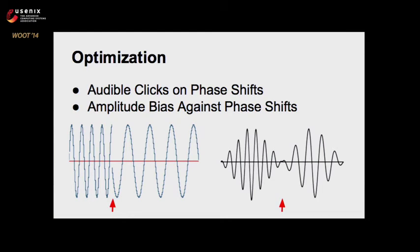One problem we ran into with frequency shift keying is that whenever you shift from one symbol to another — shifting from high to low frequency — you might not be at a convenient part of your wave to do this. When you have a dramatic break, like that red arrow on the left, it can manifest itself as a click in the speakers. When this starts happening too often, it ruins the stealthiness of your attack. So what we implemented, shown on the right, is reducing the amplitude at the beginning and end of each symbol — this way, if you have a dramatic shift in the pattern, it's so quiet you won't hear it.